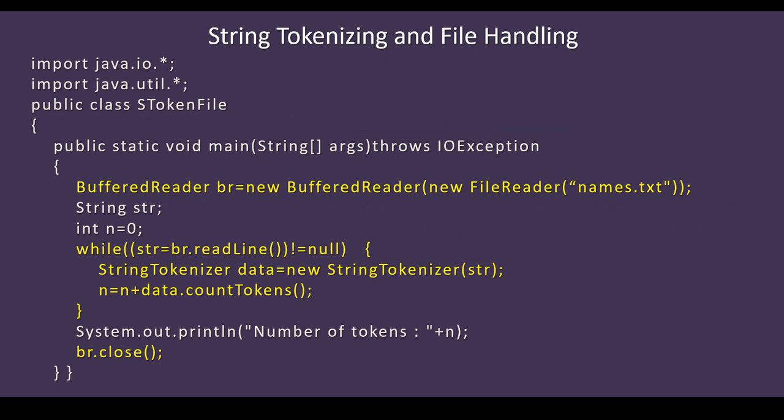Inside public static void main, you have: BufferedReader br = new BufferedReader(new FileReader("names.txt")). As we discussed, names.txt should be available in the system and should already have been created. Otherwise it gives a file not found error. So first you create names.txt, and if it is available then it can be read using the BufferedReader object br.